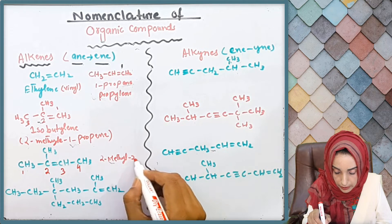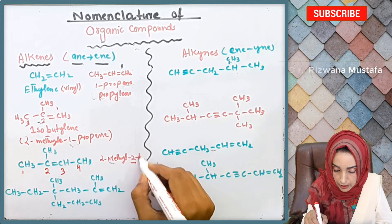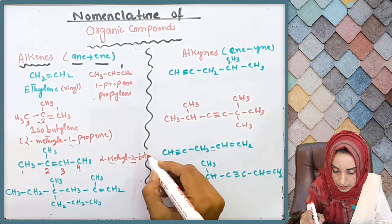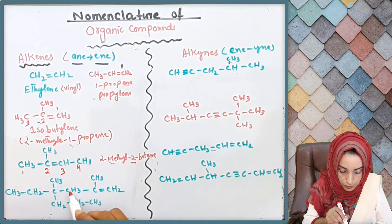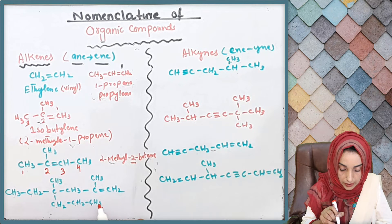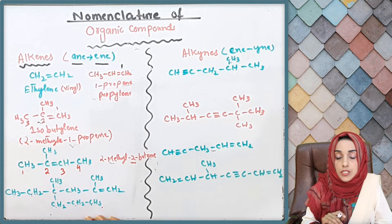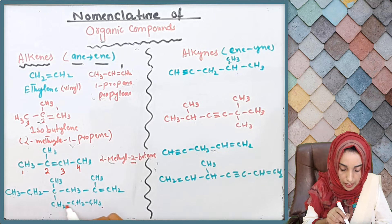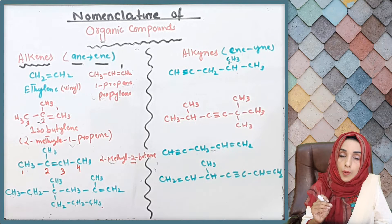The double bond is at position two, so we use 'two' to represent its position. We are having four carbons — butene. Now let's look at another example: we have one, two, three, four, five, six carbons in one chain option. Another option gives us one, two, three, four, five, six, seven carbons. Since this chain has seven carbons, it will be considered the parent chain because the longest chain is the one with the maximum number of carbons.